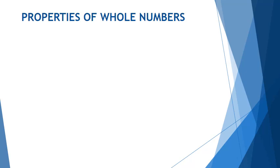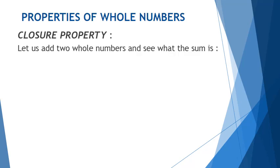The first property is closure property. In closure property, we have to add two whole numbers and we will see what will be the sum of this addition. For example,